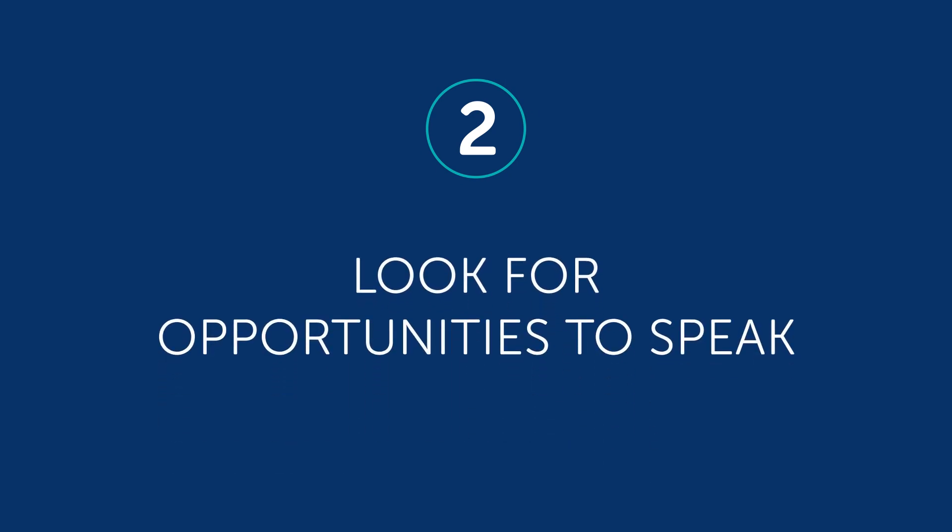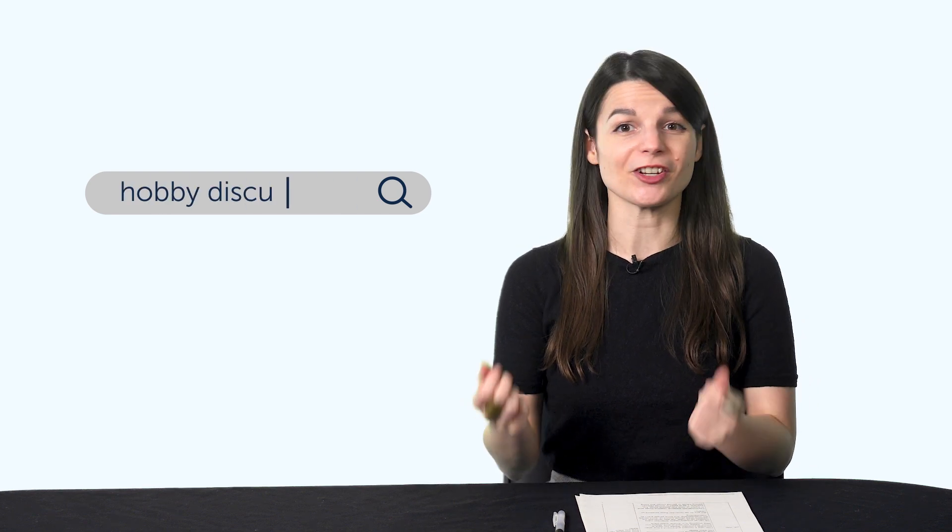Tip two: look for opportunities to speak. Many learners have trouble finding public places to practice the language they're studying. See if there are language groups in your community or at your school. If you have trouble with that, look online and be creative. You don't need to search for groups specifically for language learners. See if you can find a hobby discussion in your target language. Maybe you'll find a news discussion group. Think outside the box. Find somewhere to practice and make mistakes. When you do mess up, you'll probably remember it.